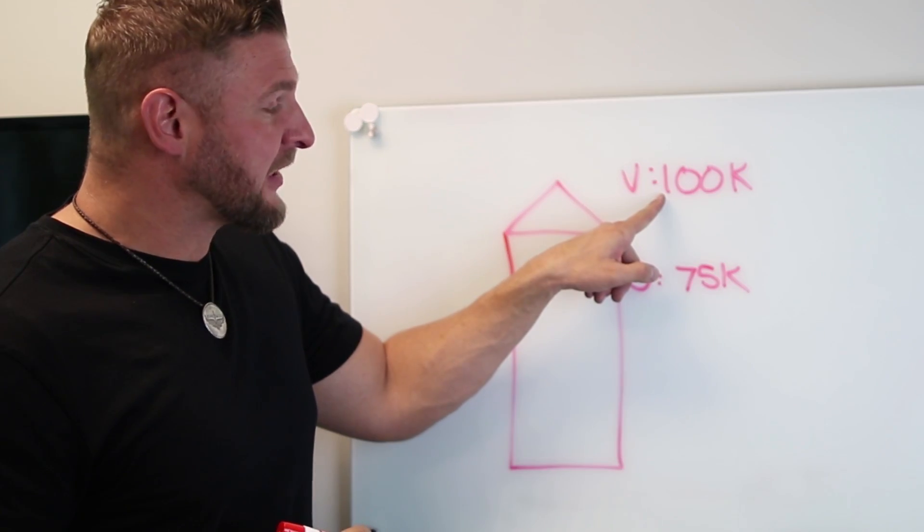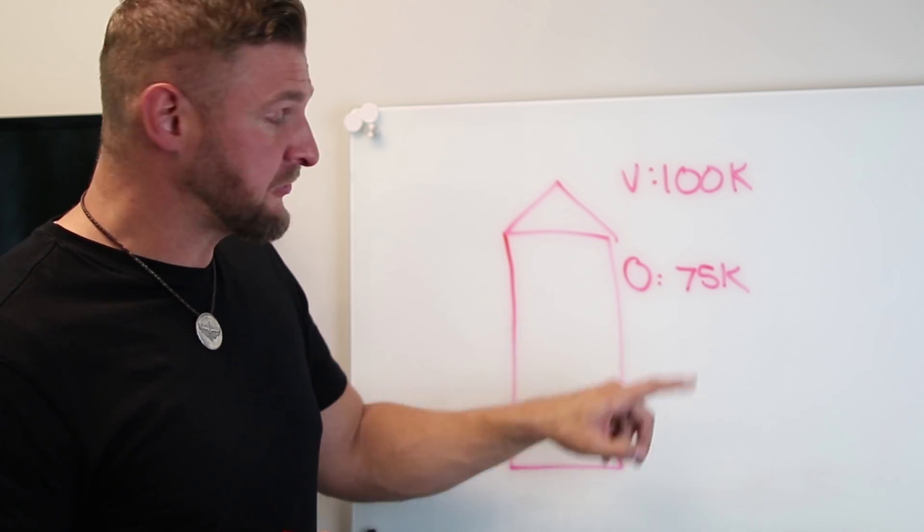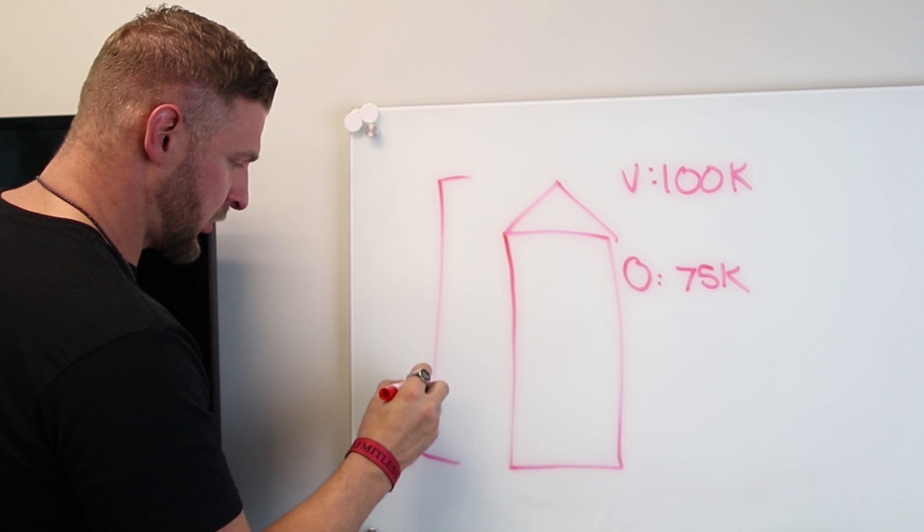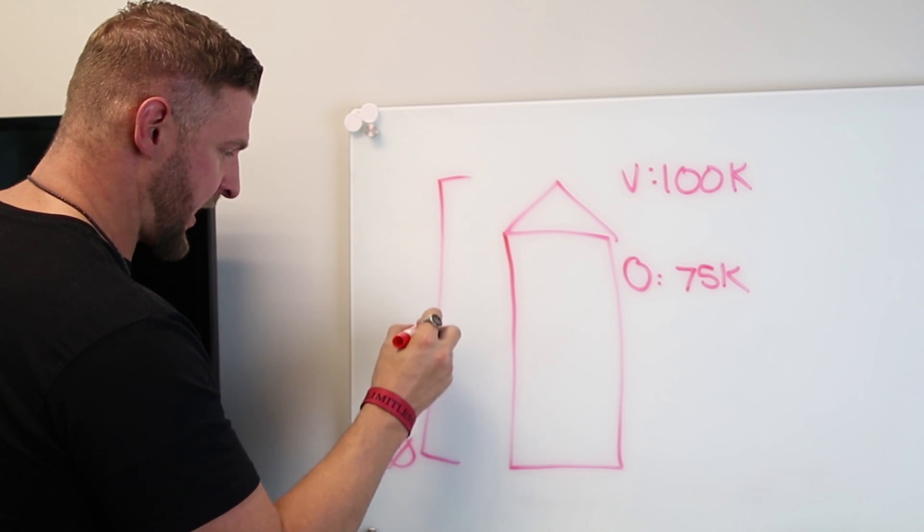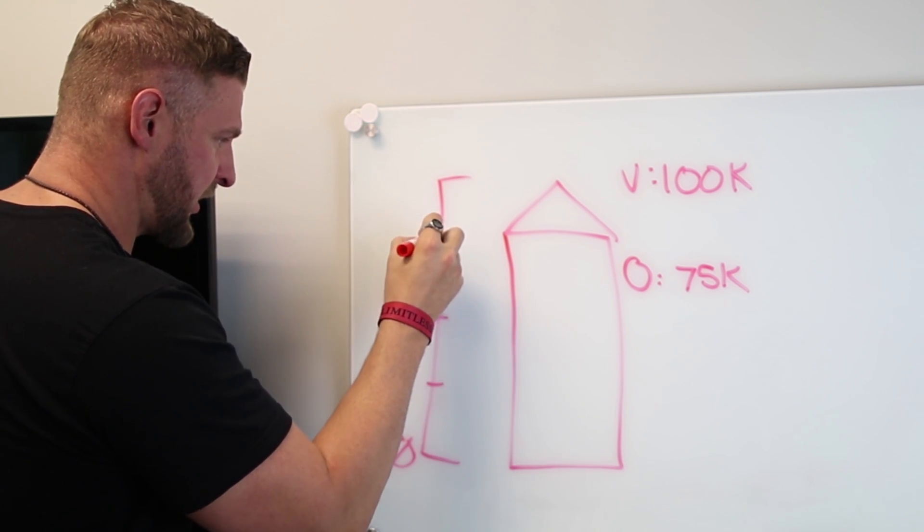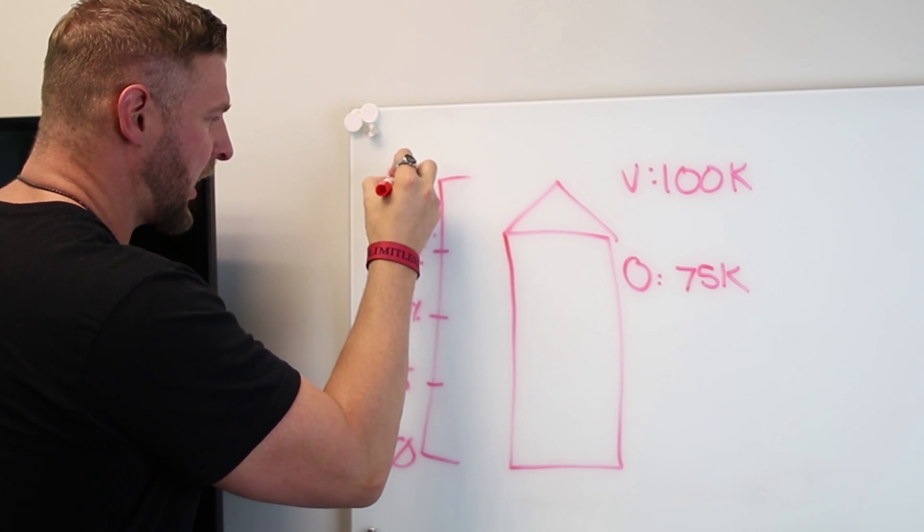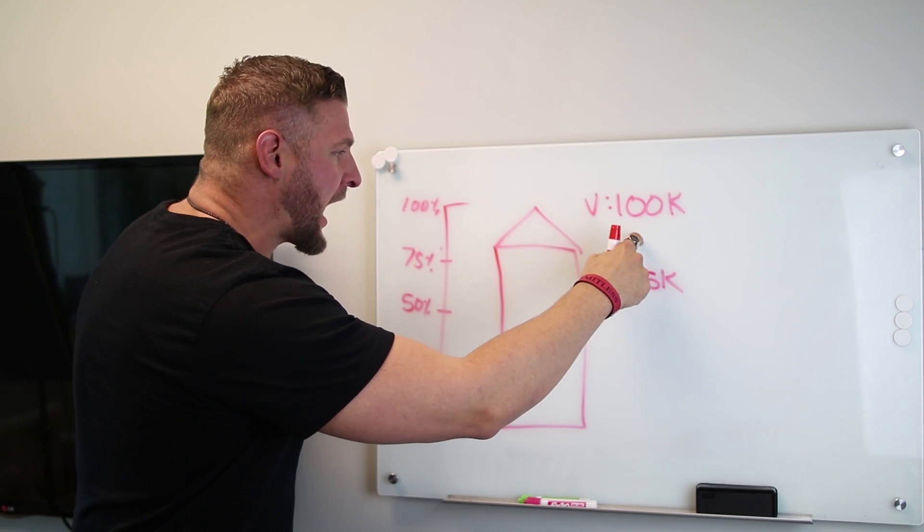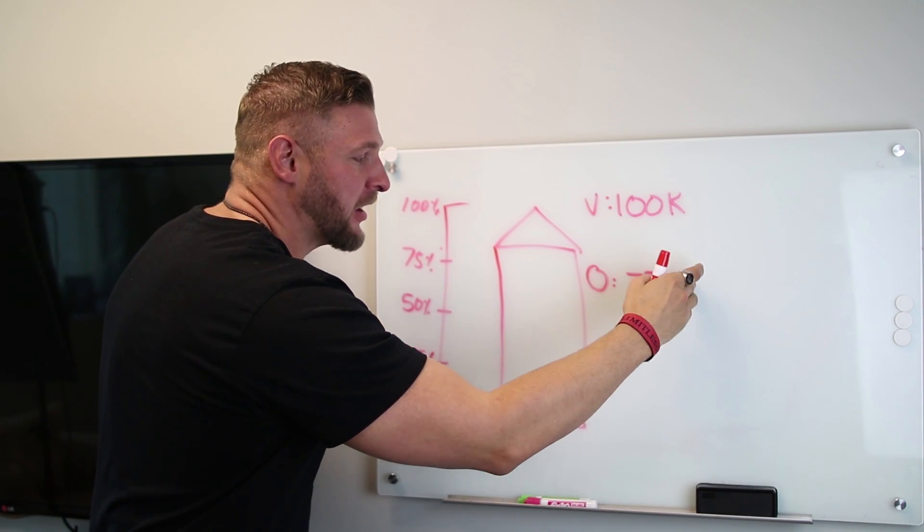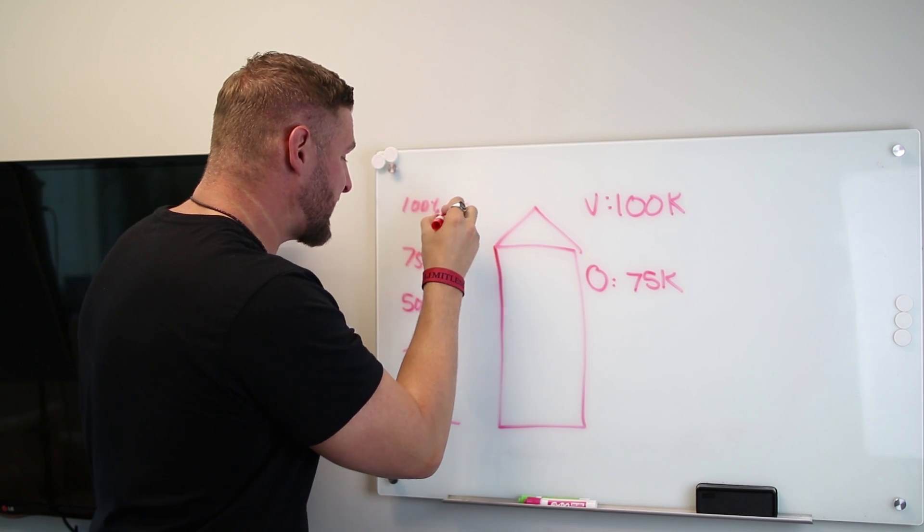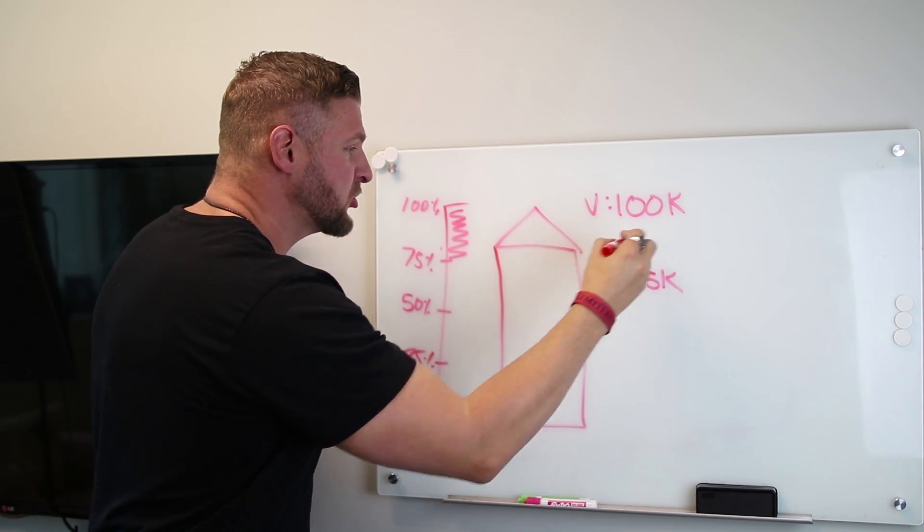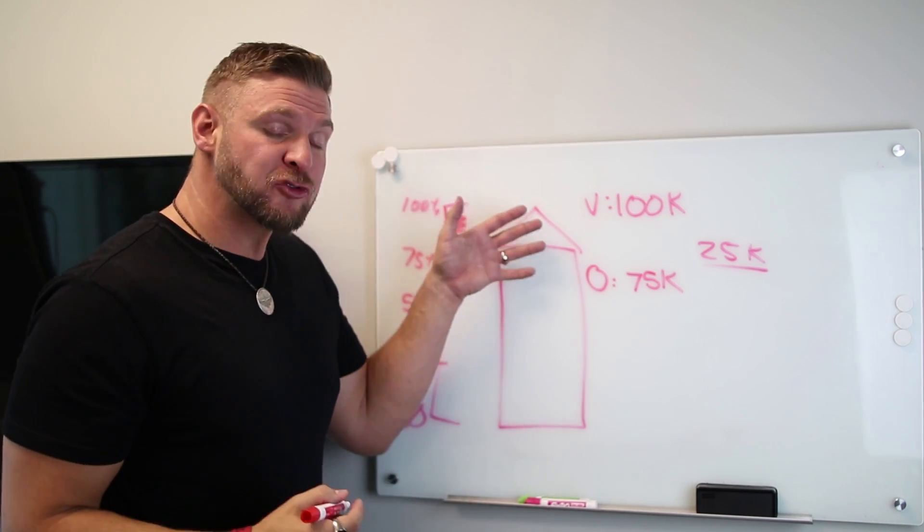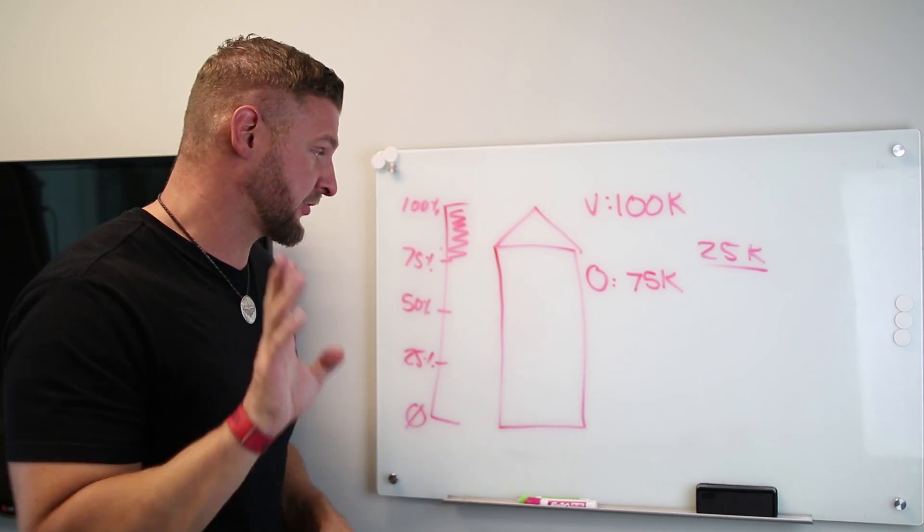So it has a value today of $100,000. I owe 75 and if this is my meter of 0, 25, 50% paid off, 75 or 100%. Take a look at this. Right now, I have a gap of what I owe is 75 and what it's worth is 100 and there's a gap right there of $25,000.